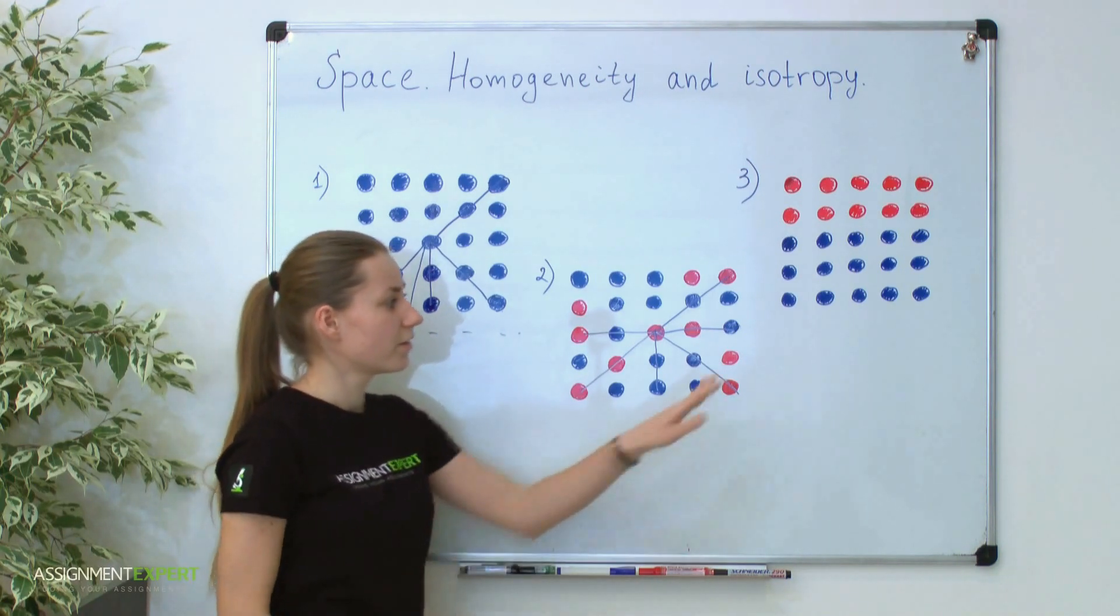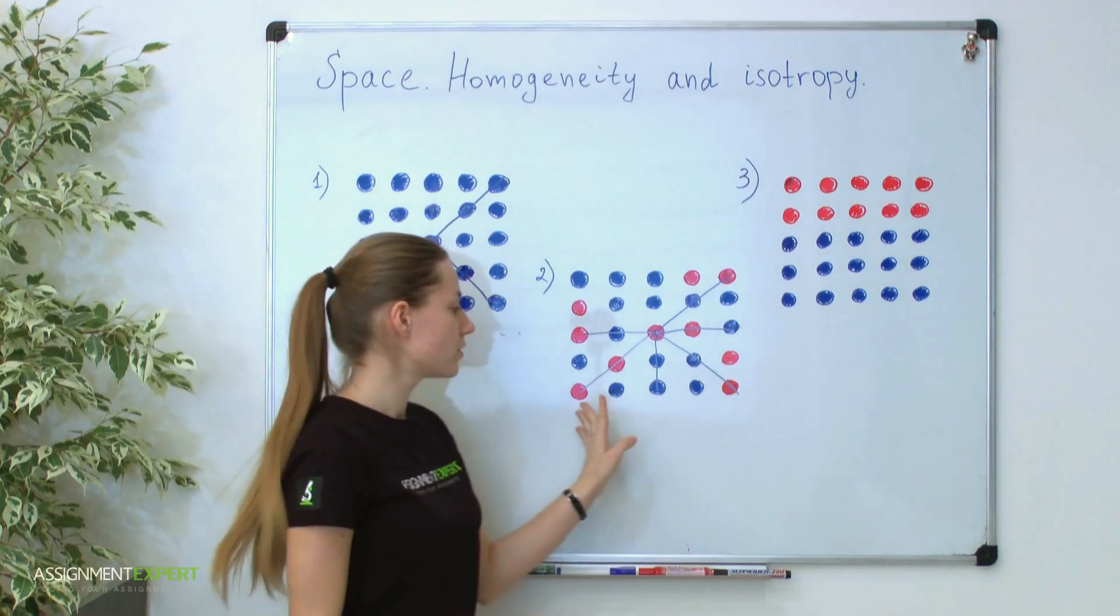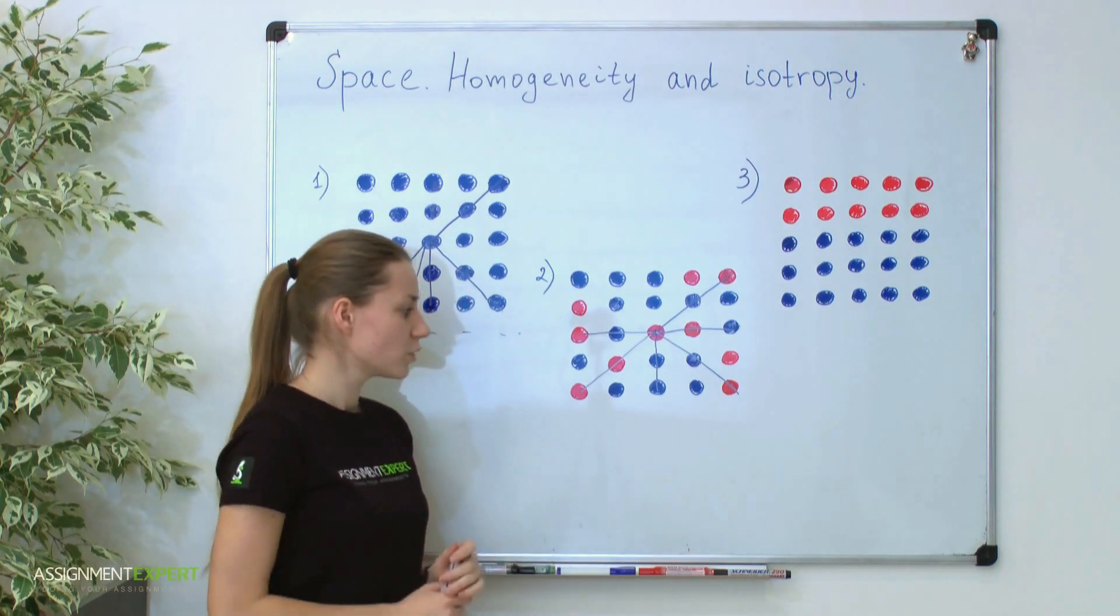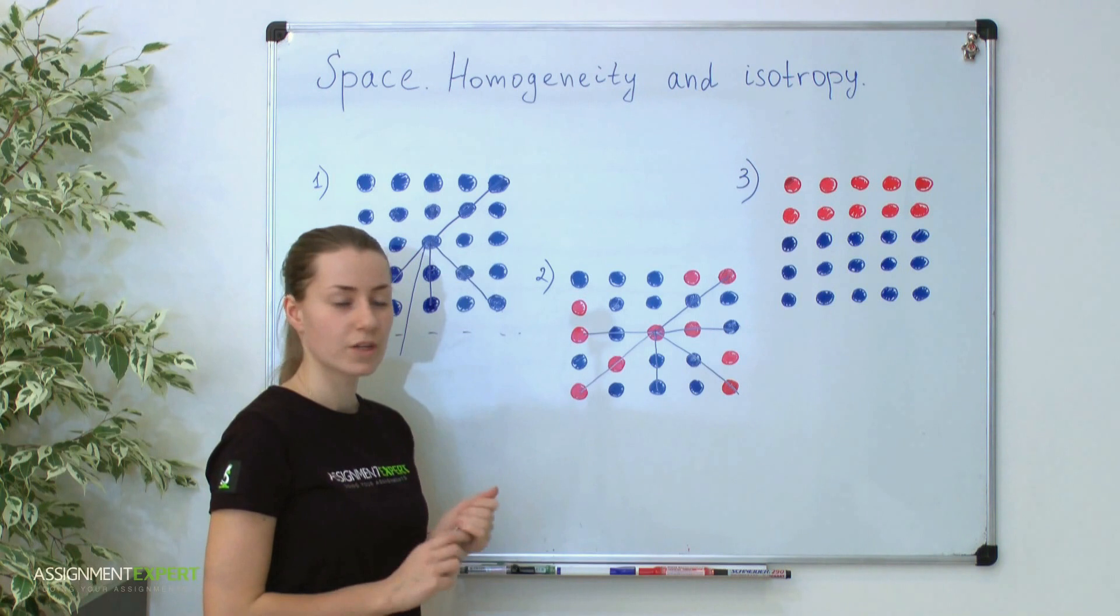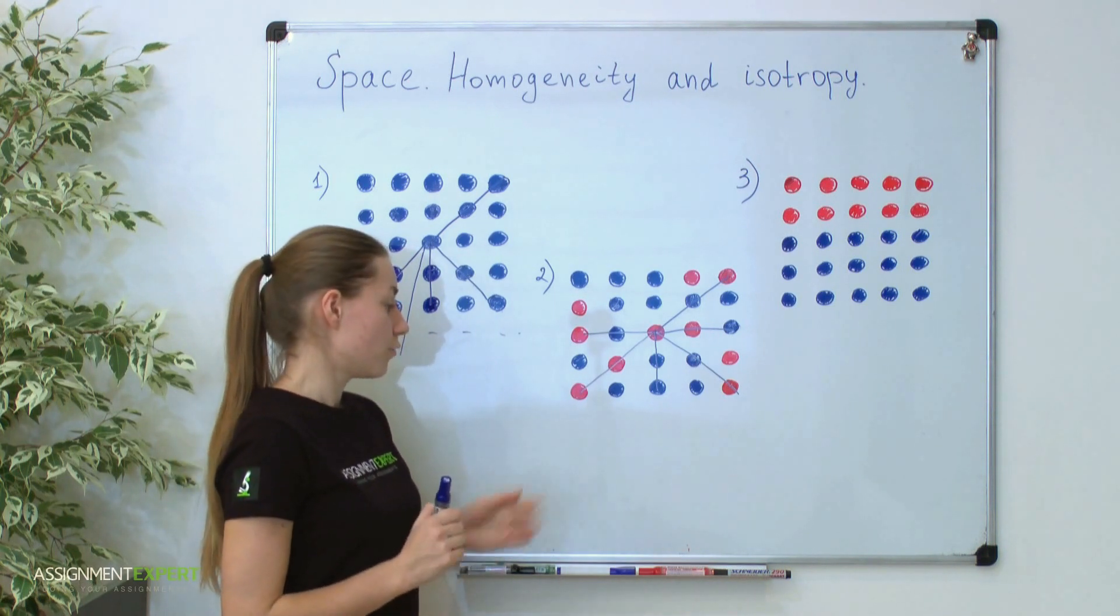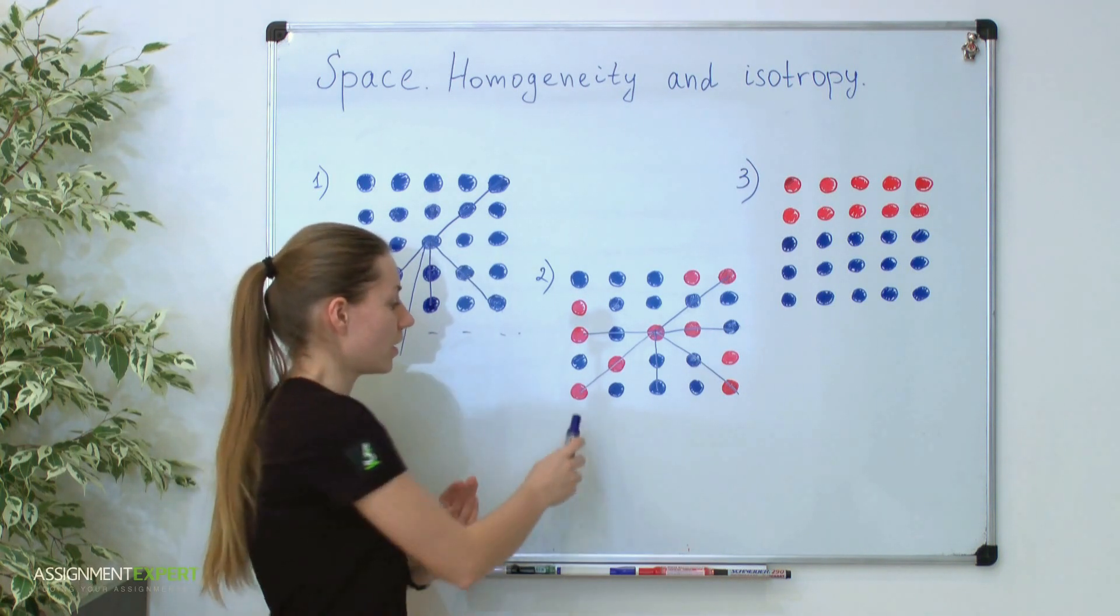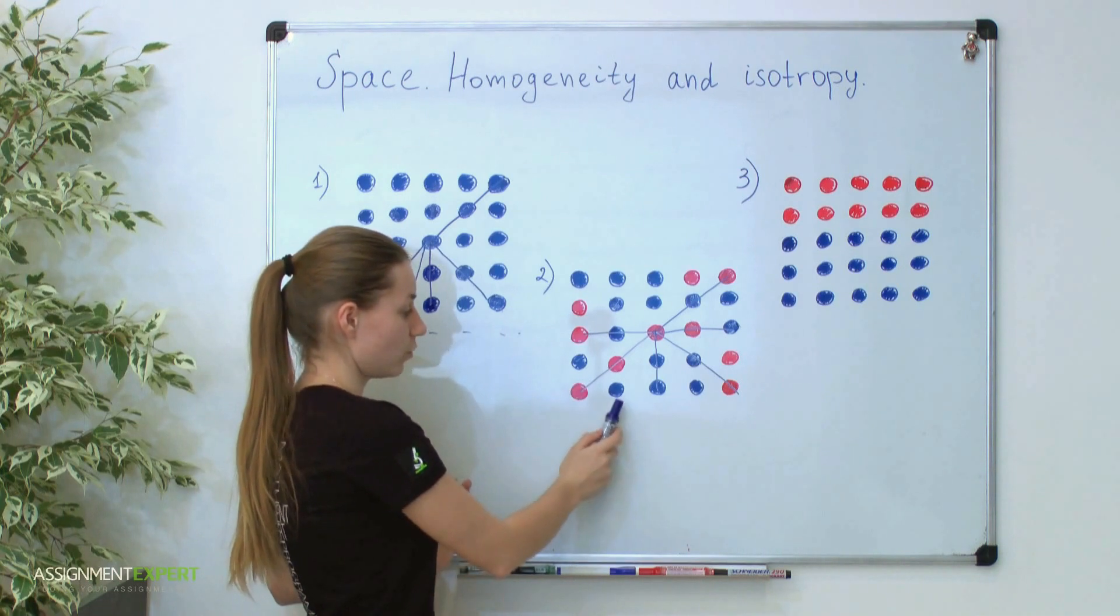Moreover, we can construct an isotropic object from an anisotropic one. For it we need to divide our anisotropic object into a small group of identical ones. For instance, we can divide it into red and blue atoms.